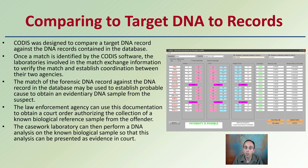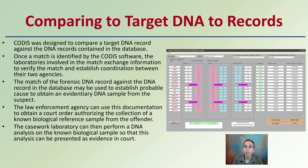Once a match is identified by CODIS software, the laboratories involved exchange information to verify the match and establish coordination between the two agencies. The match of forensic DNA records against records in the database may be used to establish probable cause to obtain an evidentiary DNA sample from the suspect. Law enforcement can use this as documentation for a court order to collect the biological sample, and the casework laboratory can then perform a DNA analysis on the known biological sample to be presented as evidence in a courtroom setting.